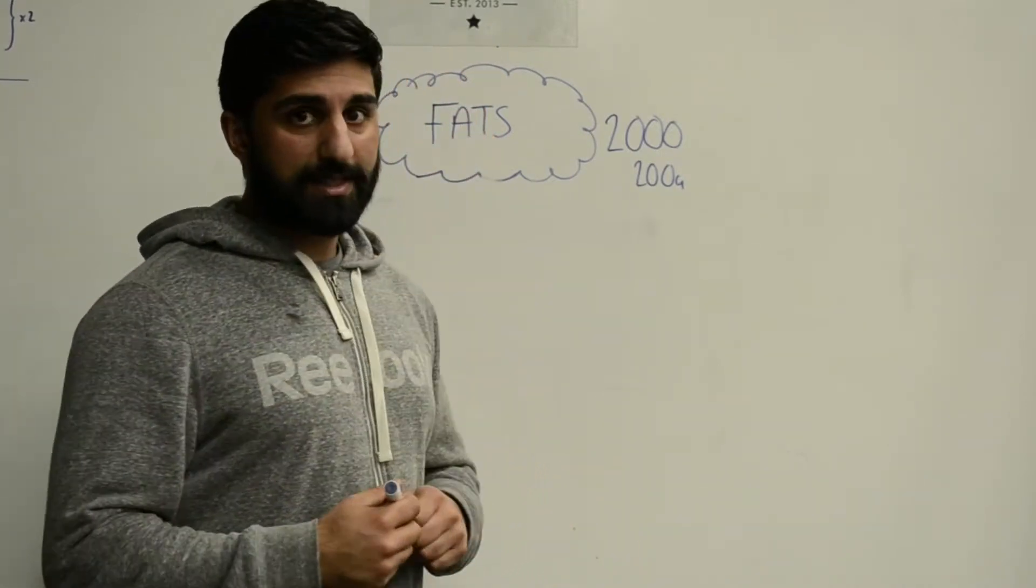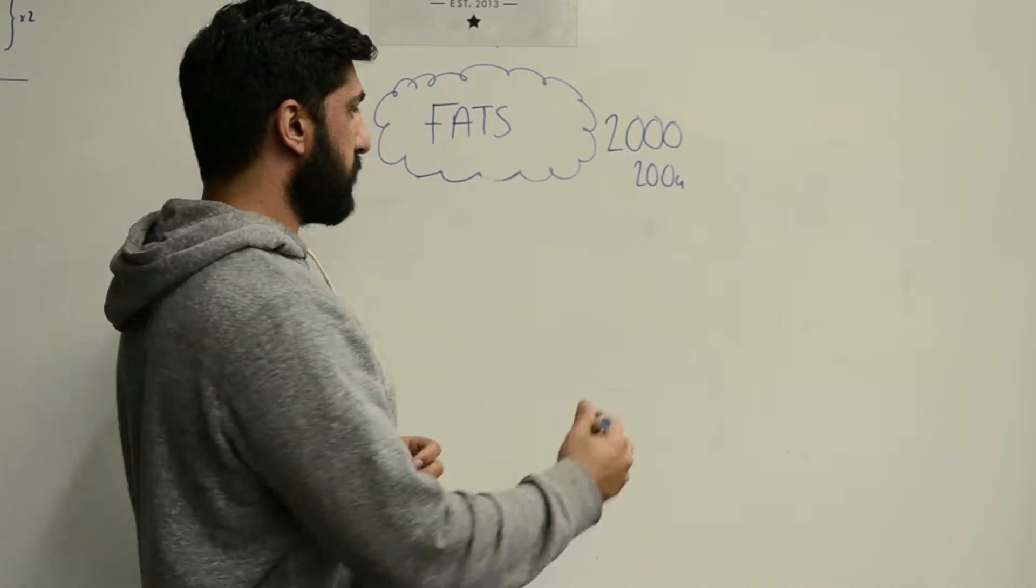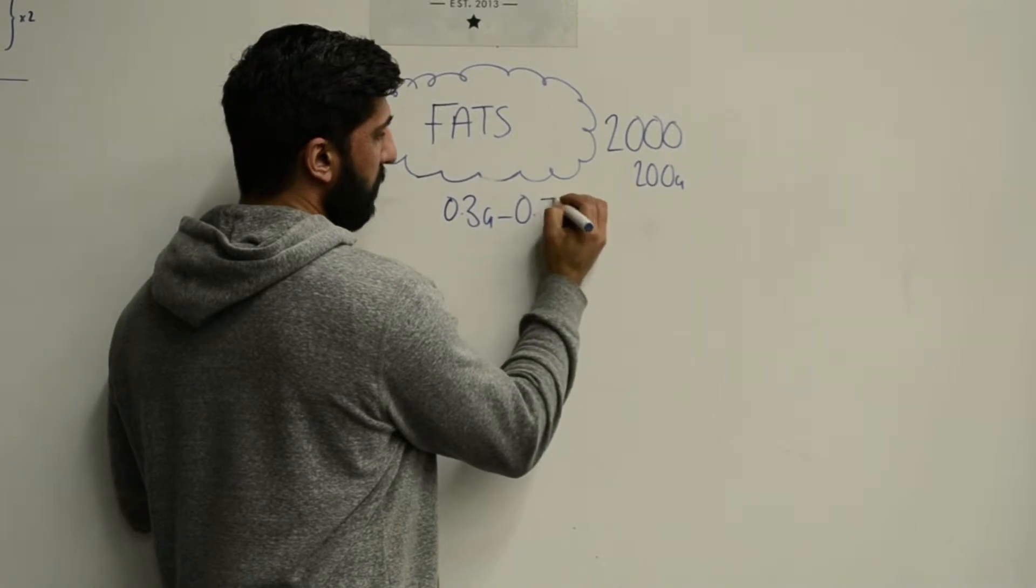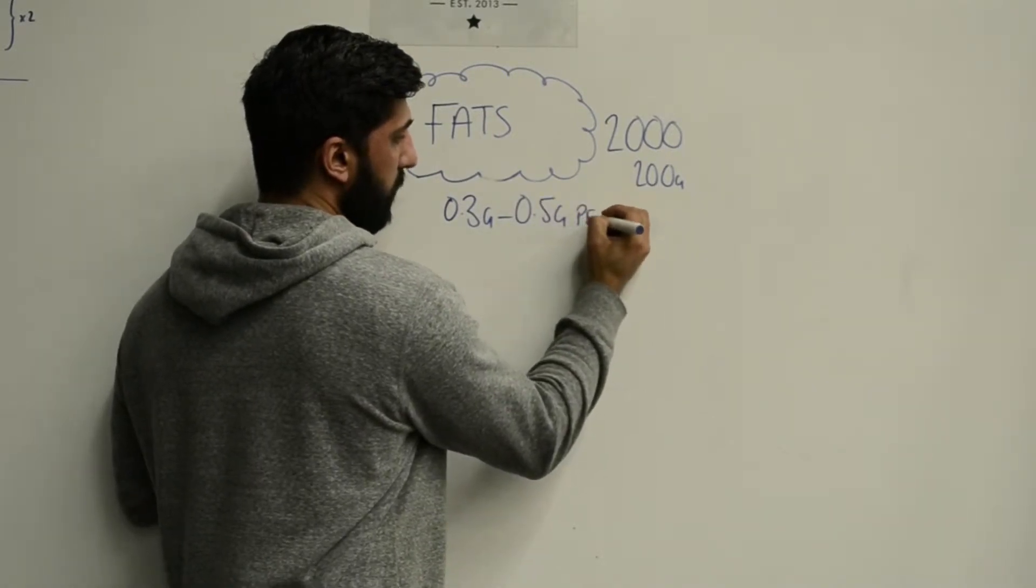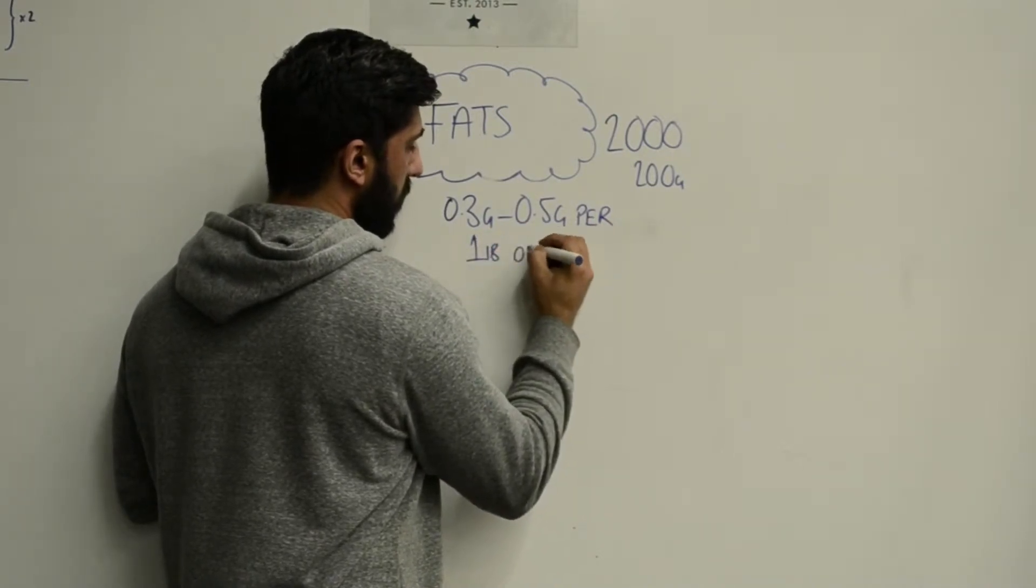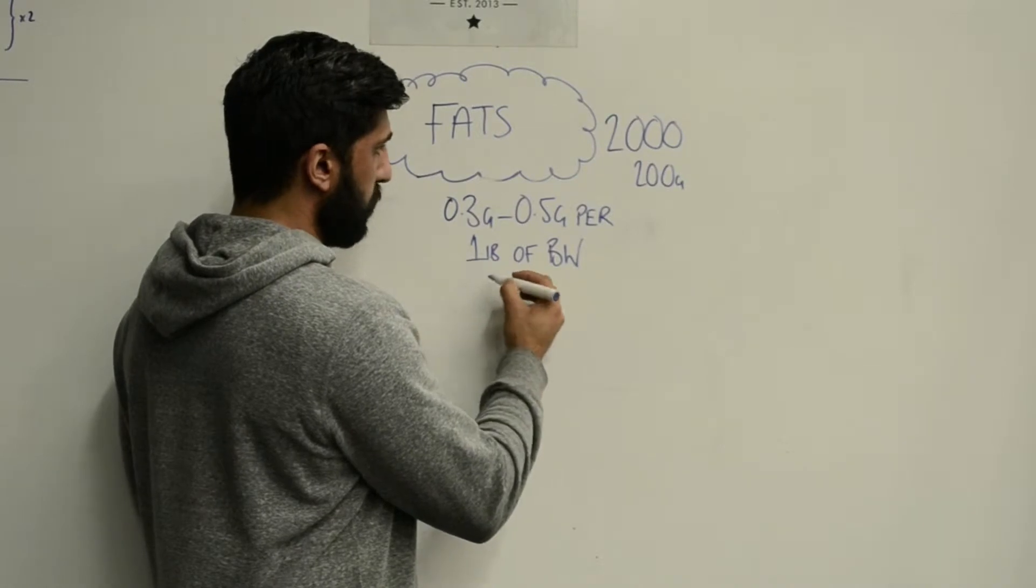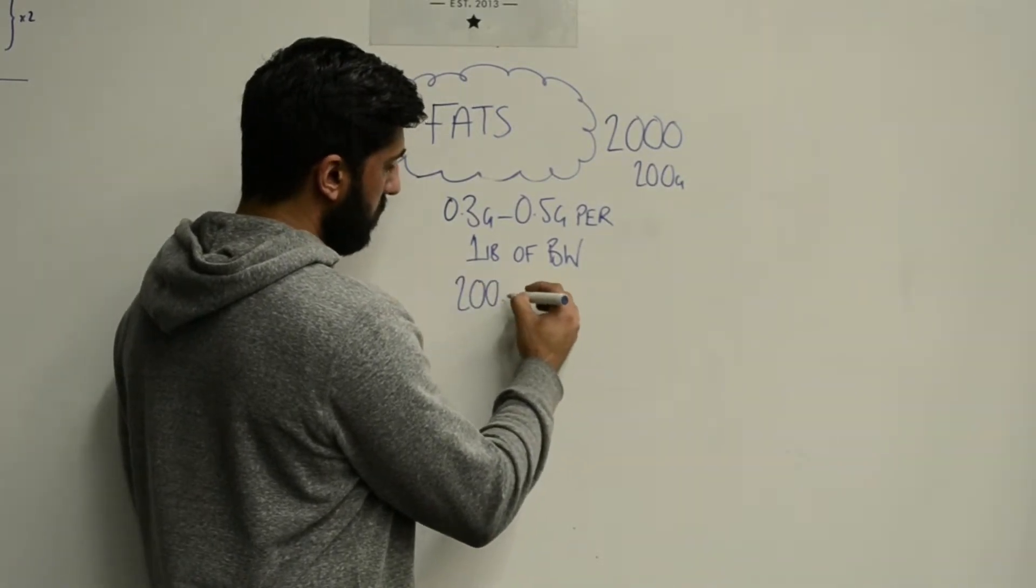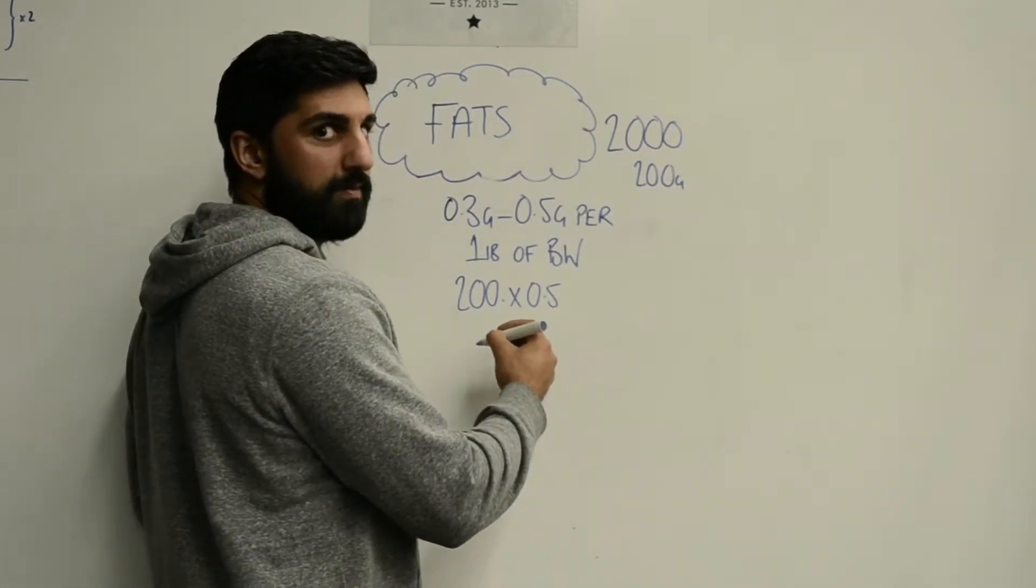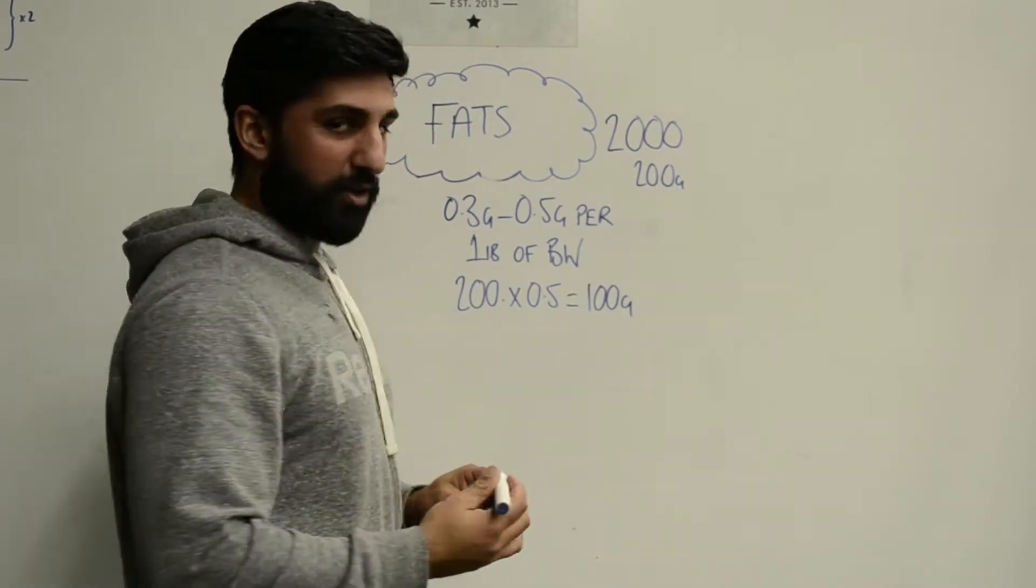The way you're going to work out your fats is 0.3 to 0.5 grams for every pound of body weight. Keeping it simple again, if we have this 200 pound person, we times that by 0.5, which equals 100 grams of fat.